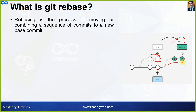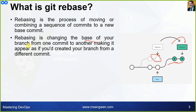So let's understand: rebasing is a process of moving or combining a sequence of commits to a new base commit. Which essentially means it is changing the base of your branch from one commit to another, making it appear as if you had created your branch from a different commit. You committed, you are working here with these features, and you want to rebase yourself at this set of features when you reach this point.